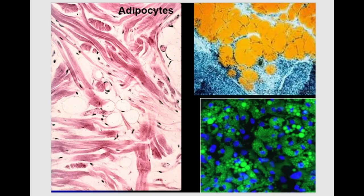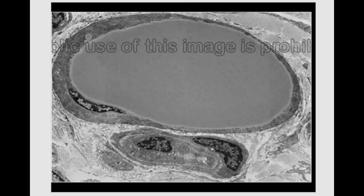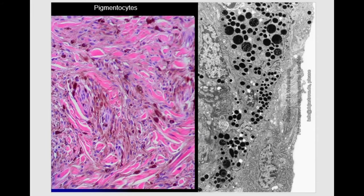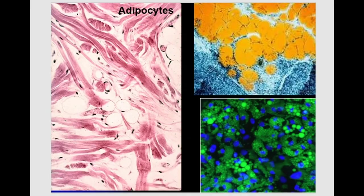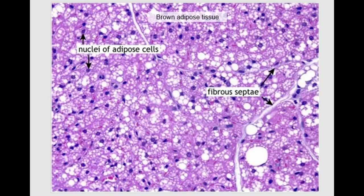The next type of cell is adipocytes. White adipocytes are round-shaped cells with a large lipid droplet inside. This lipid droplet is so large that it pushes the cytoplasm, nucleus, and organelles to the periphery, making the cell look like a ring. White adipocytes compose white adipose tissue. Brown adipocytes are also present in the human body. Unlike white adipose cells, brown adipose cells are polygonal in shape with nuclei located centrally.